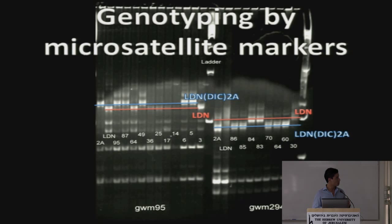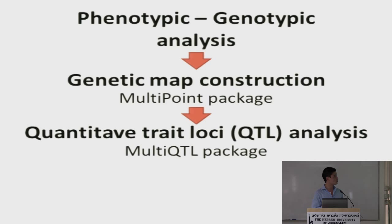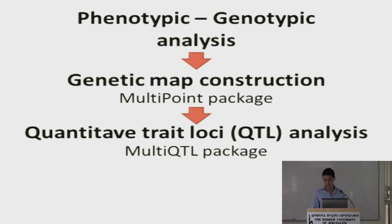Once I completed the phenotyping, I started genotypic analysis using microsatellite markers to check polymorphism. Compiling both phenotypic and genotypic analysis, we built a genetic map using the multipoint package. From the map we created, we then performed a quantitative trait loci analysis.